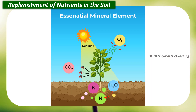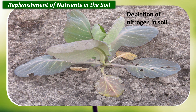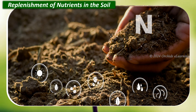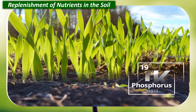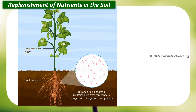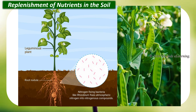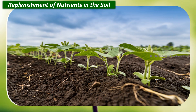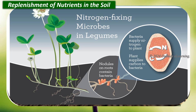Plants use mineral nutrients, especially nitrogen, present in the soil for their growth. As a result, there is a depletion of nitrogen in the soil over time. Manures and fertilizers are used to replenish the nutrients in the soil; besides nitrogen, they also contain potassium and phosphorus needed by plants for healthy growth. The symbiotic association of Rhizobium and leguminous plants such as the pea plant is a natural way of replenishing the soil with nitrogen. Sometimes farmers grow leguminous plants alternately with other crops to restore the nitrogen content of the soil.